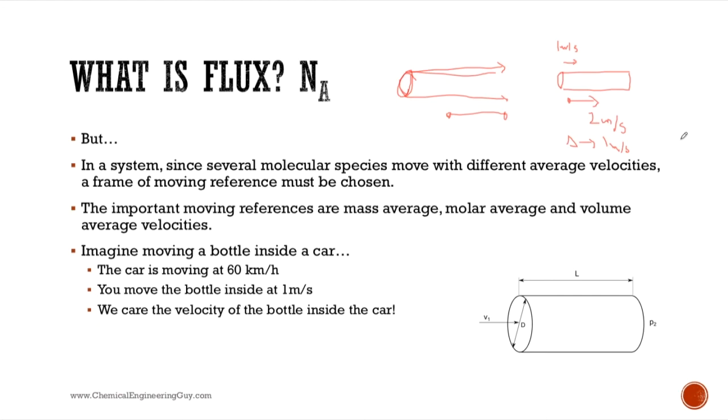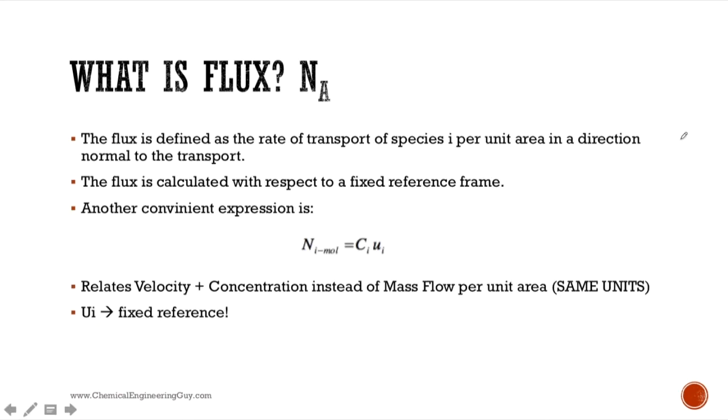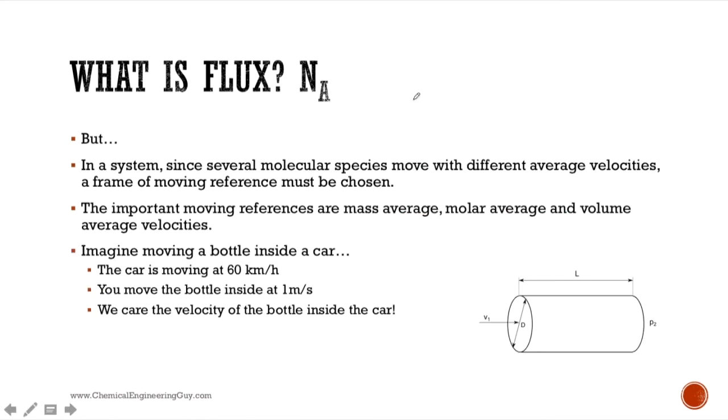That's the idea we're going to consider from now on, because now the fixed reference frame will be the moving pipe. If the pipe is moving at one meter per second, and our flux of interest is moving at two meters per second, our reference frame is one meter per second. Two minus one will be one meter per second. This is now referenced to the bulk flow instead of a pipe.